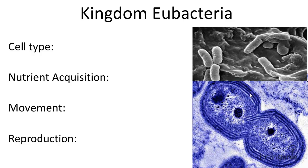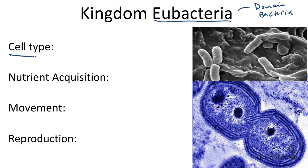Kingdom Eubacteria is located in its own domain, the umbrella domain Bacteria. This domain includes organisms that are unicellular and prokaryotic.